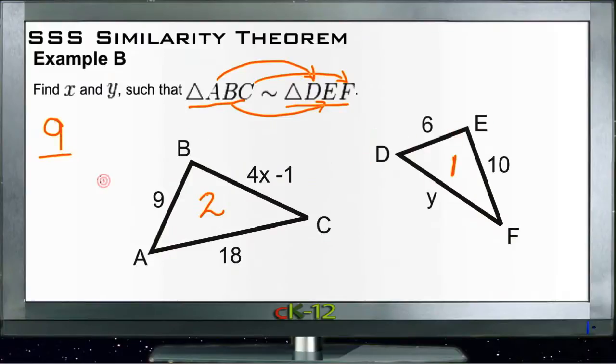We say that side AB, which is 9, should be in the same ratio to the shortest side of the other triangle, 6, as the medium side, so BC, which is 4x minus 1, is to the medium side over here, which is 10. We can do 9 over 6, which actually reduces to 3 over 2. Let's go ahead and do that just to make our subsequent math a little easier.